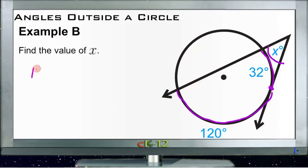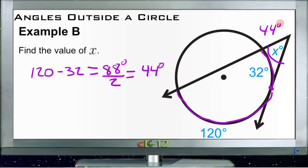So we take 120 minus 32 and that gives us 88 degrees. We divide that by 2 and that gives us x which would be 44 degrees. So this angle measure in here is 44 degrees.